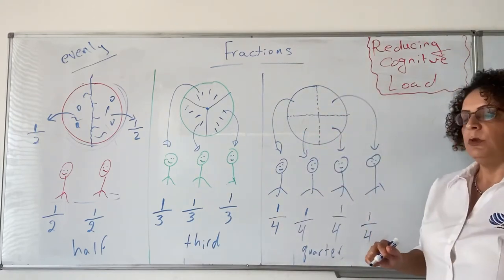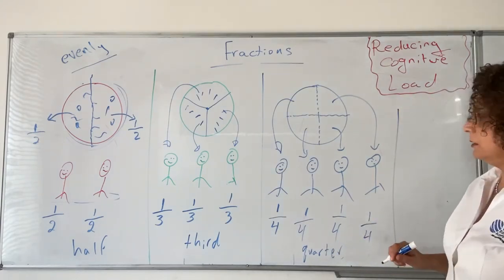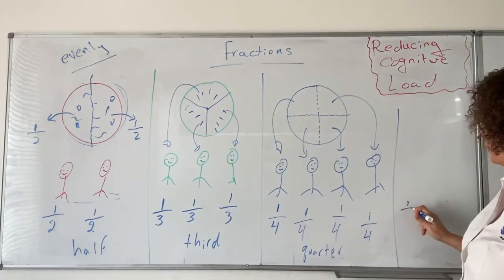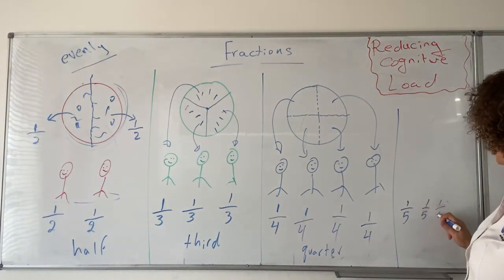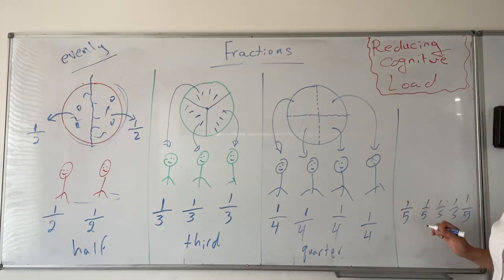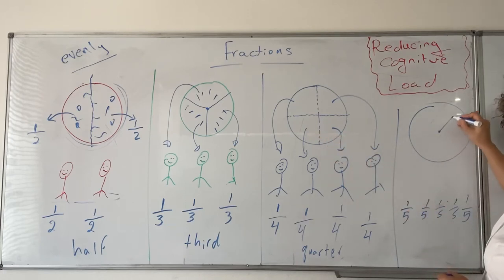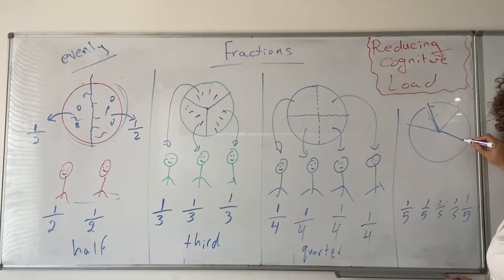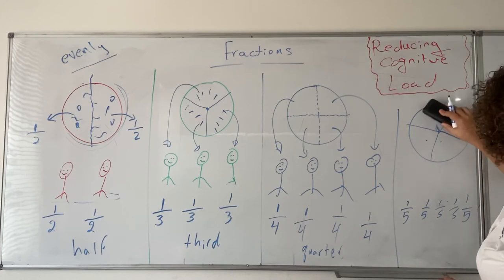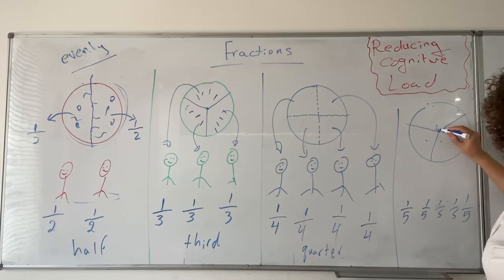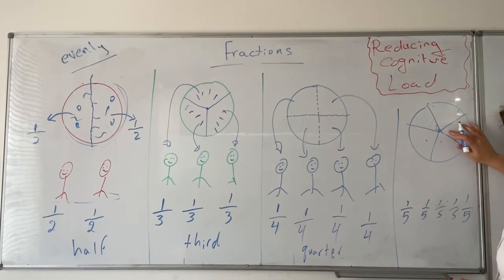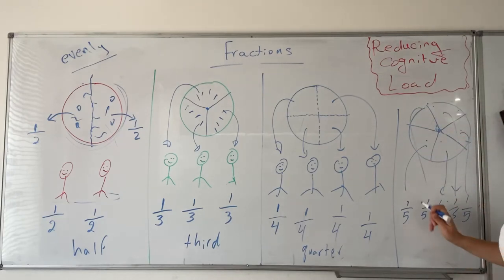Now if you want to share between five people, each one will get one out of five — one fifth each person. So we would have five fifths because we have five people. The way we cut it is very similar to cutting into thirds. We cut it into one, two, three, four, five equal pieces. So I have five people and each one will get one out of these five. This is how you create fifths.